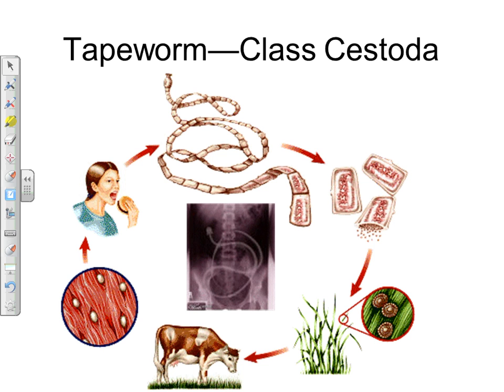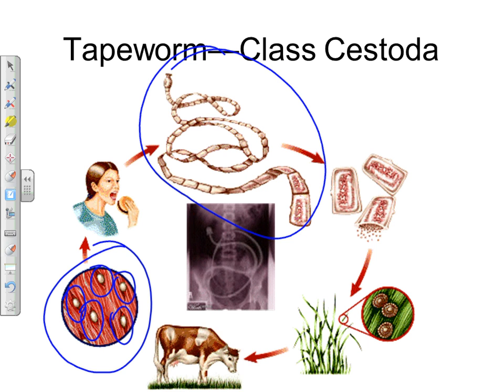Looking at the tapeworm life cycle: you get tapeworms by eating undercooked meat — cysts found in the muscles of animals like cows or pigs hatch inside your digestive tract and form a worm. This worm attaches to the walls of the small intestine and absorbs nutrients. As it reproduces, segments called proglotids break off and are passed out of the body. If those segments reach the ground, another animal can eat them, develop cysts in its muscles, and the cycle continues.